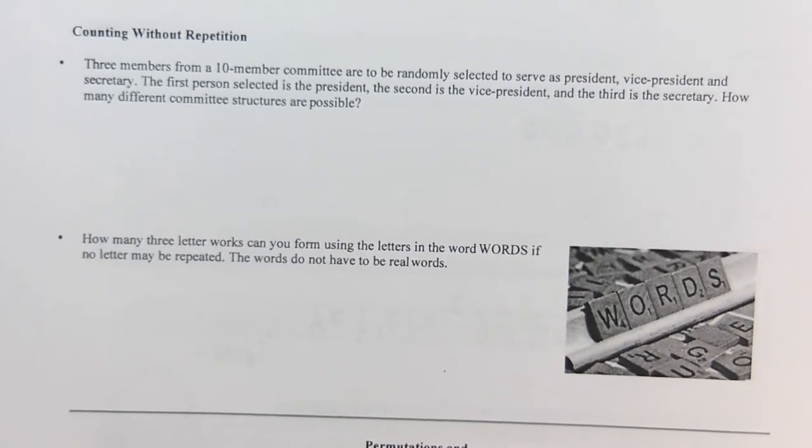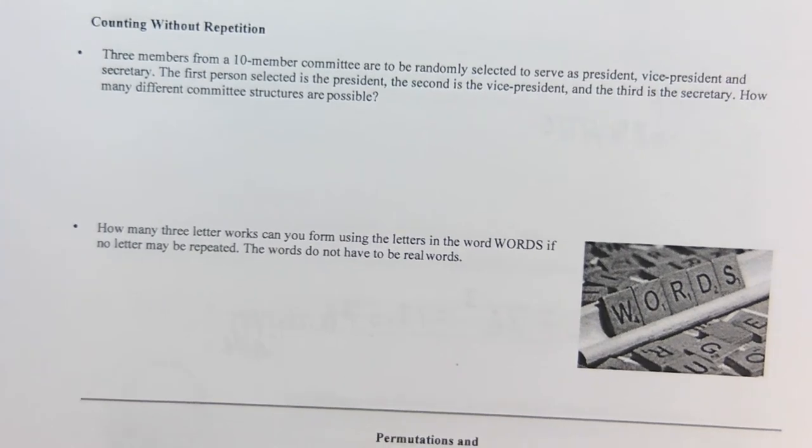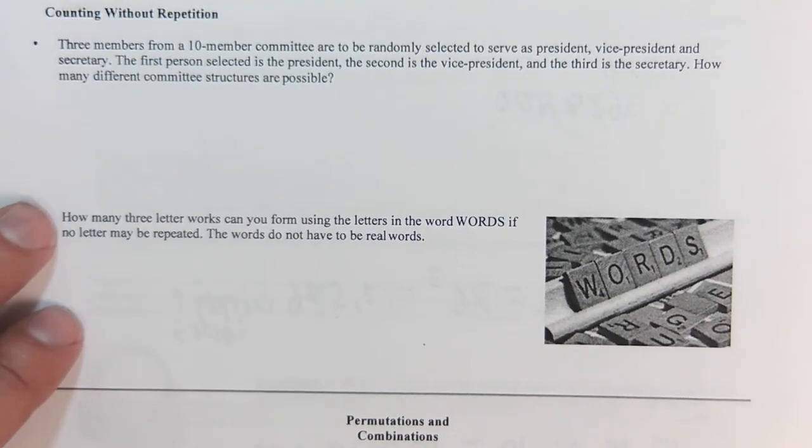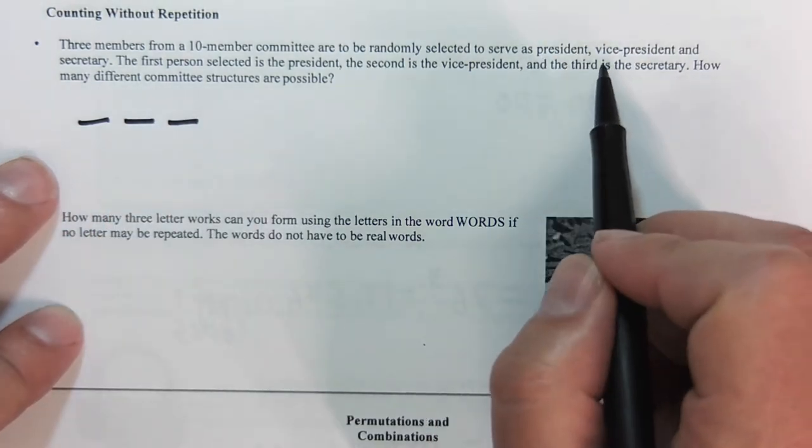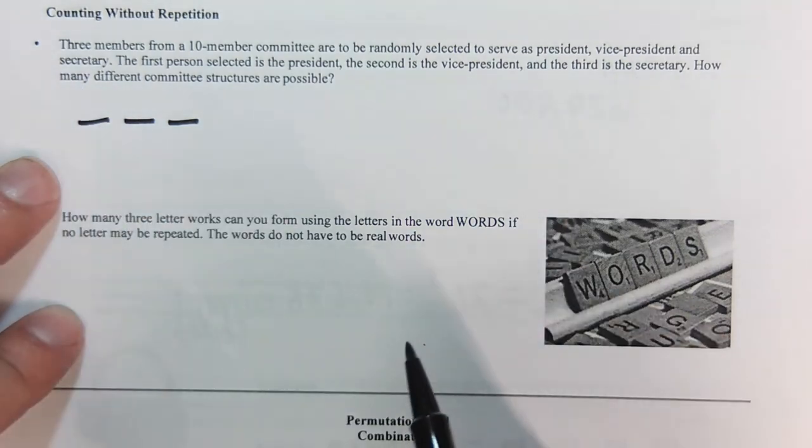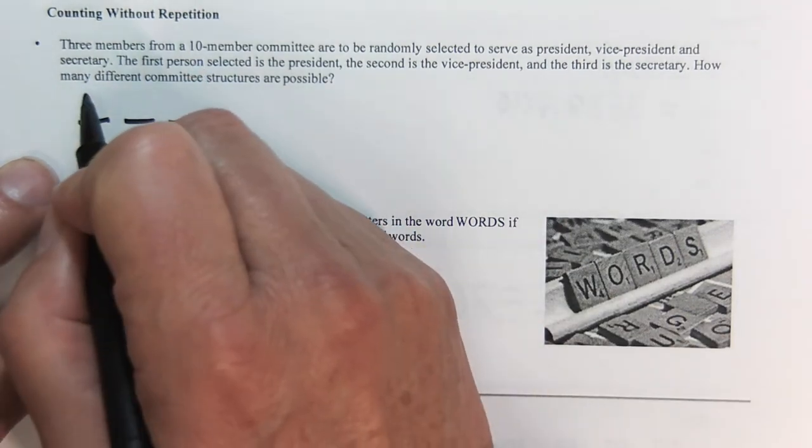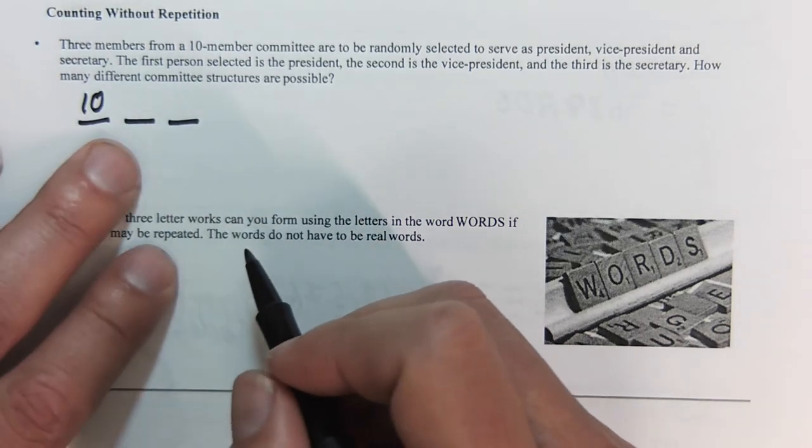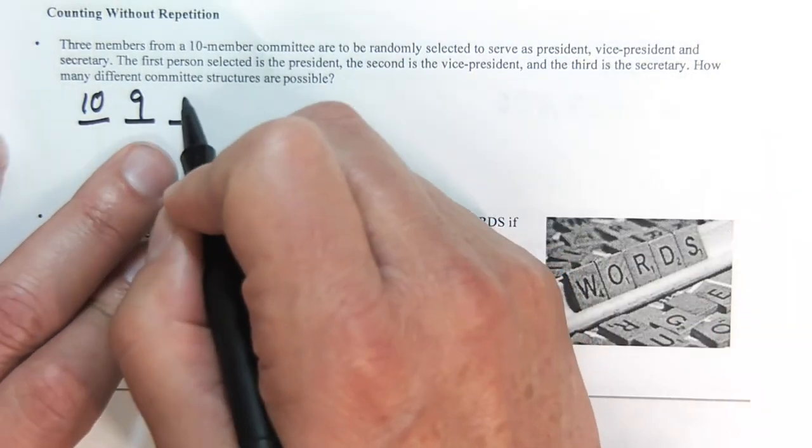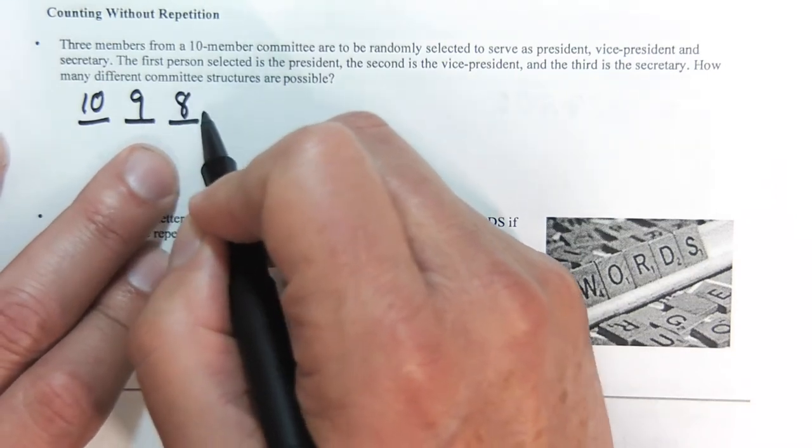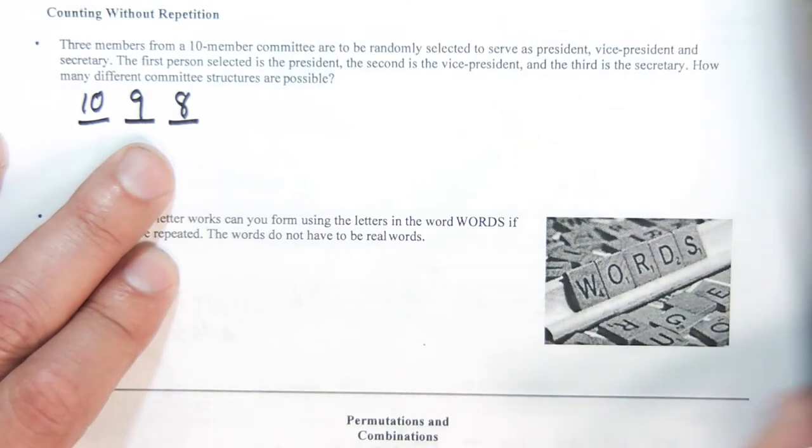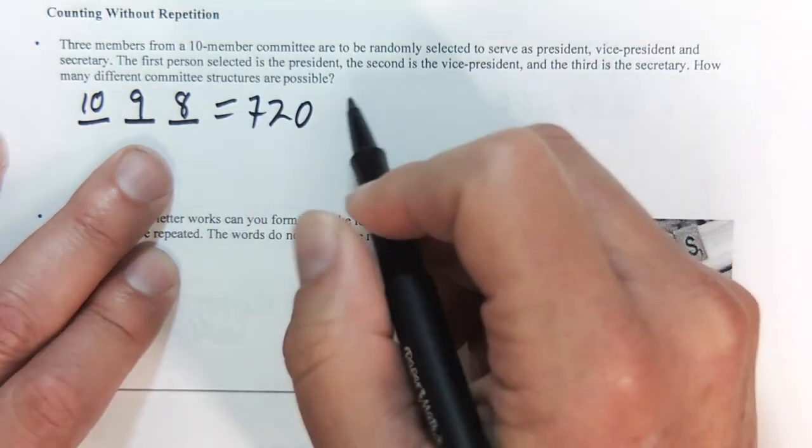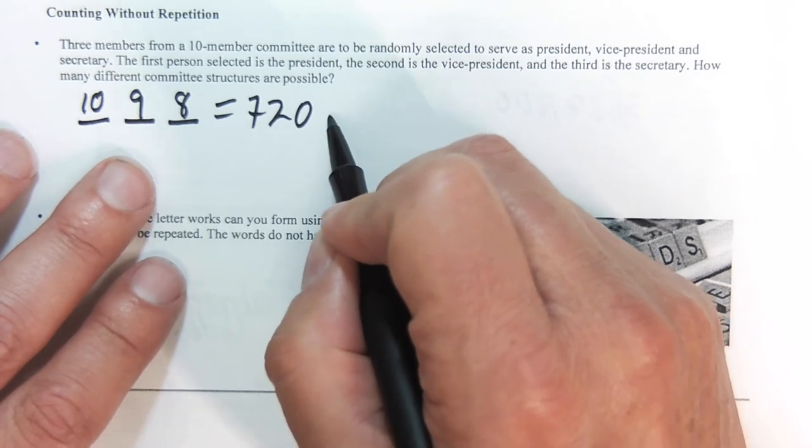So here we are counting without repetition. We have three members of a 10-member committee. Three are going to be chosen. The first one is going to be the president, second one the vice president, and the third one the secretary. Since there's only three positions and there are 10 choices at first, we're going to have part of the factorial. After that first president has been chosen, then the vice president is chosen, and then the secretary. Each time one is chosen, there's one less person to do. So this becomes 10 times 9 times 8, or 720 combinations.